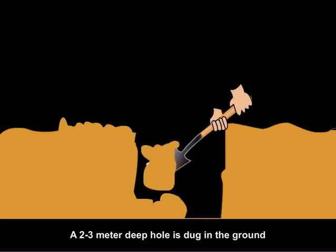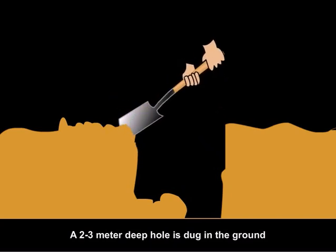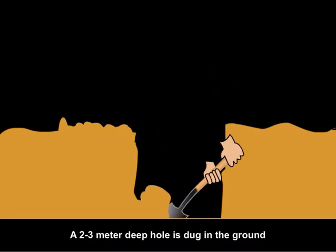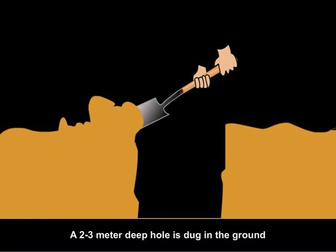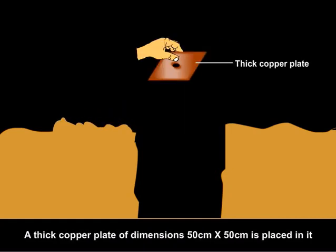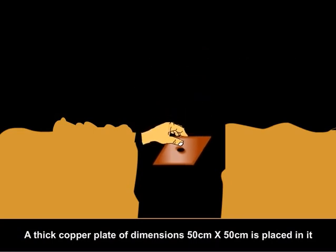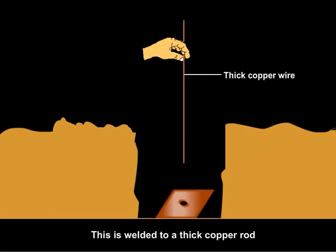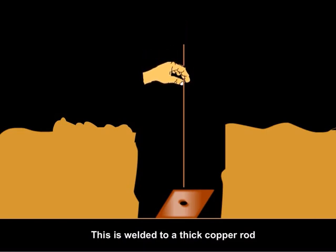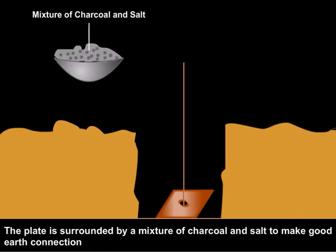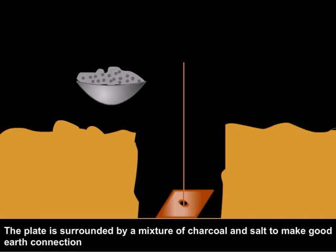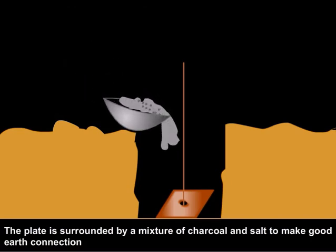To make earthing, a 2 to 3 meter hole is dug in the ground near the house. A thick copper plate, roughly half meter by half meter, is placed in the hole and welded to a thick copper rod. The plate is covered with a mixture of charcoal and salt to make good connection with earth.